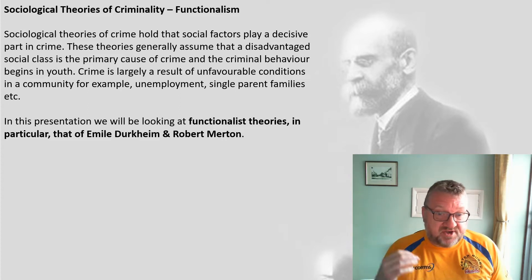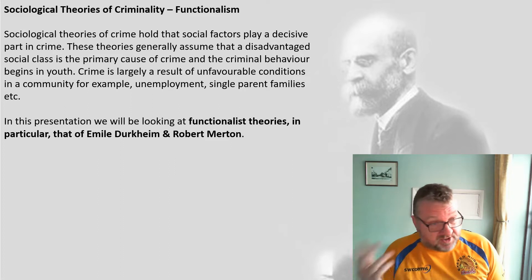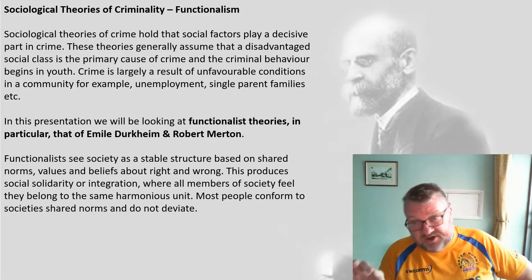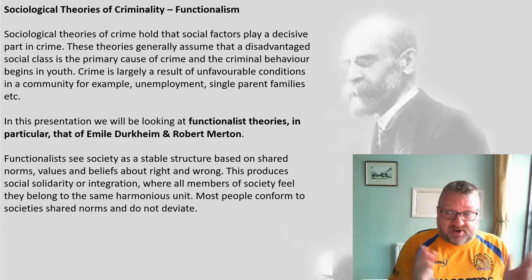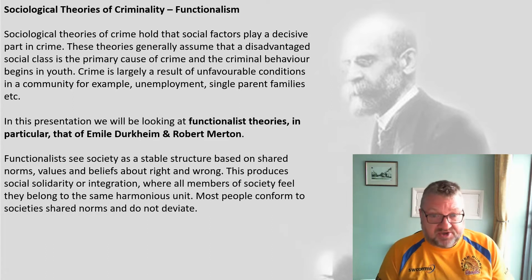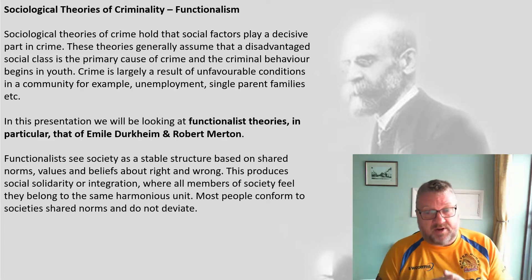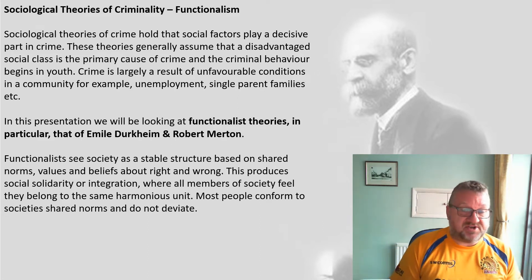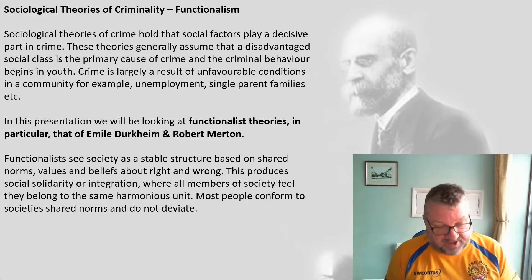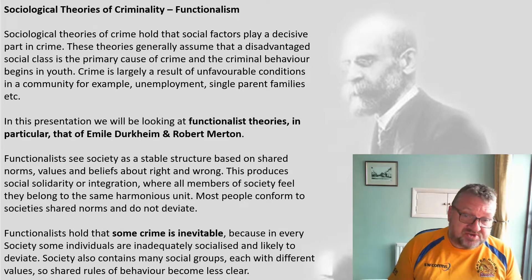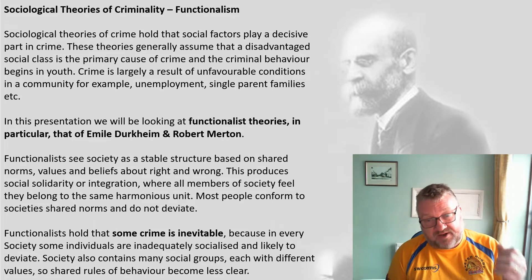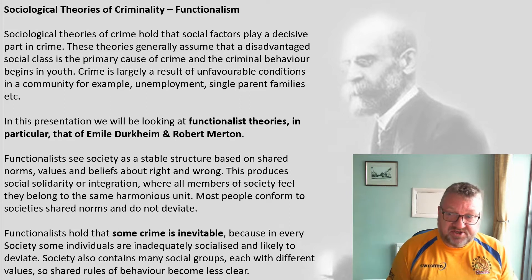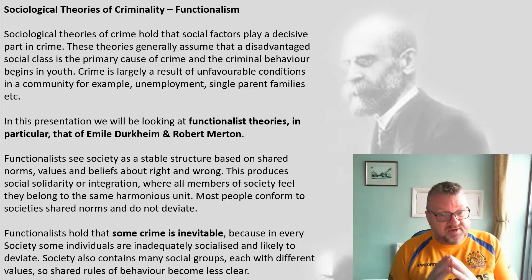Now we're going to look at functionalist theories — a branch of sociology — and two sociologists: Durkheim and Merton. Functionalists see society as a stable structure based on shared norms, beliefs and values about what's right and wrong. This produces social solidarity; people are integrated into society, they feel they belong and work as a harmonious unit. Most people therefore conform to shared norms and don't deviate. However, functionalists also hold that some crime is inevitable because some individuals aren't adequately socialised, and society contains many social groups each with slightly different values, making shared rules of behaviour less clear.